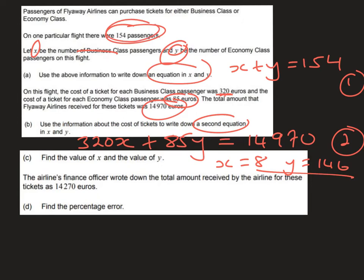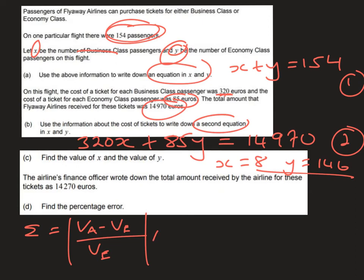Part D was quite surprisingly problematic. All we need to do is find the percentage error. The formula from the formula booklet is: the approximate value VA minus the exact value VE, divided by VE — where the modulus symbols mean we take the positive value — and we multiply that by 100.